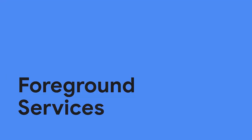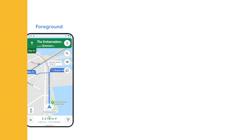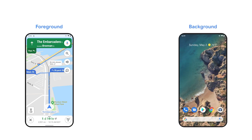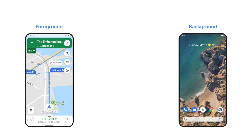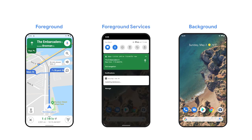Let's talk about foreground services to understand their place in performing background tasks and what's changing in Android 12 to help with that. As far as the user is concerned, an app is in the foreground when it is showing UI or doing user-perceptible work. When an app is doing work in the background, the user should have no idea. Foreground services fall somewhere in between. In some cases, such as navigation or music playback, the user should be aware and associate the notification with something they perceive as foreground.